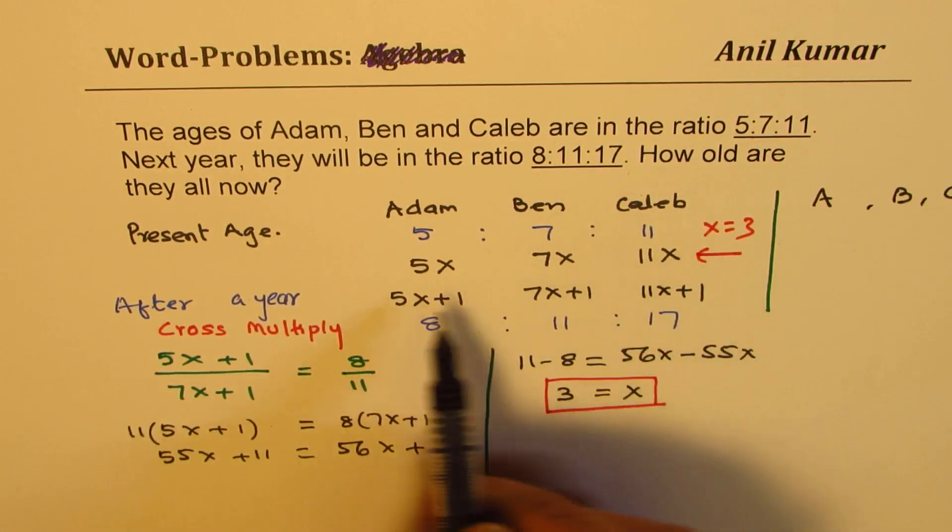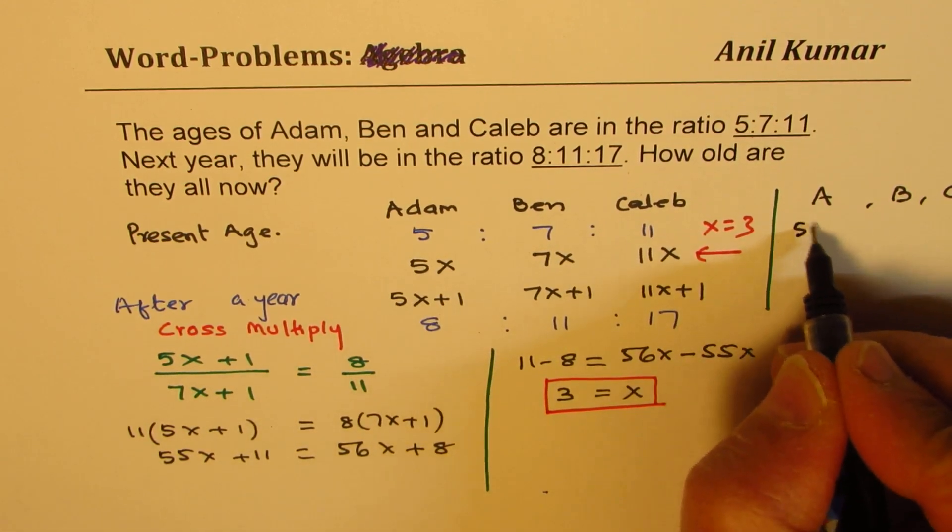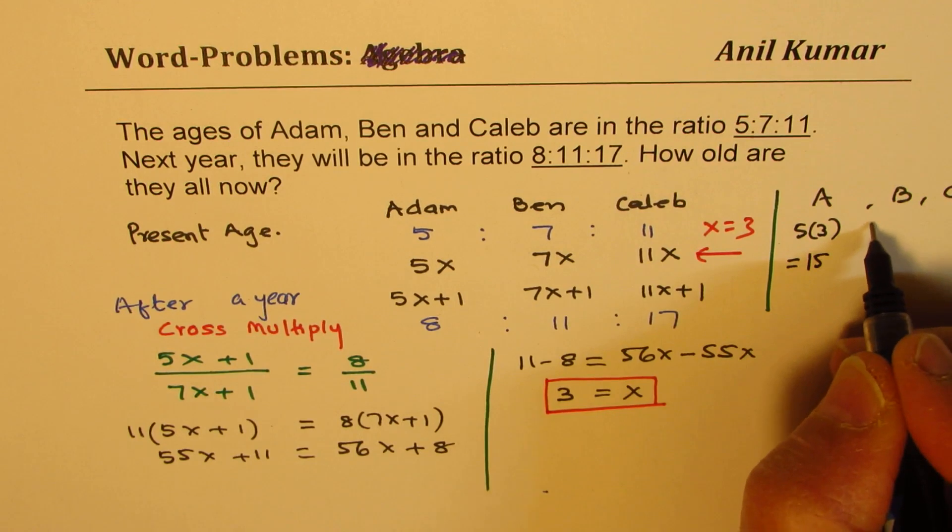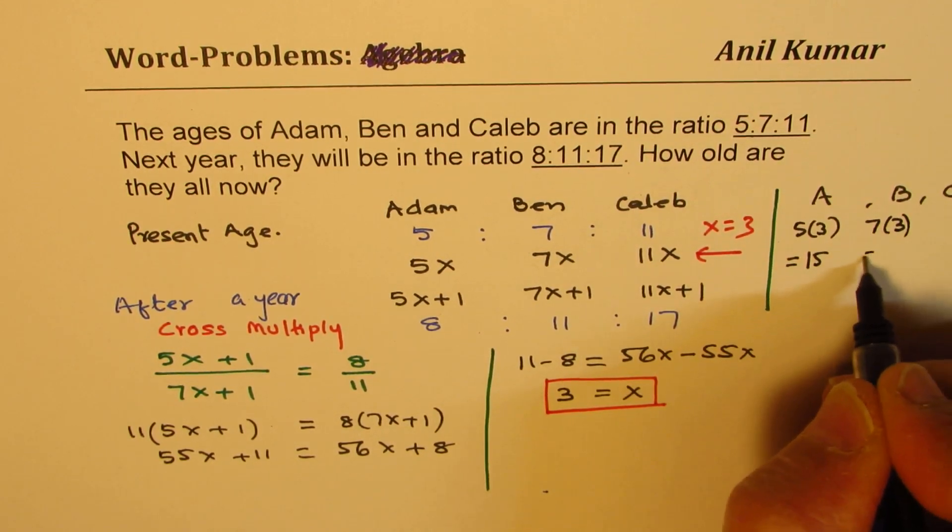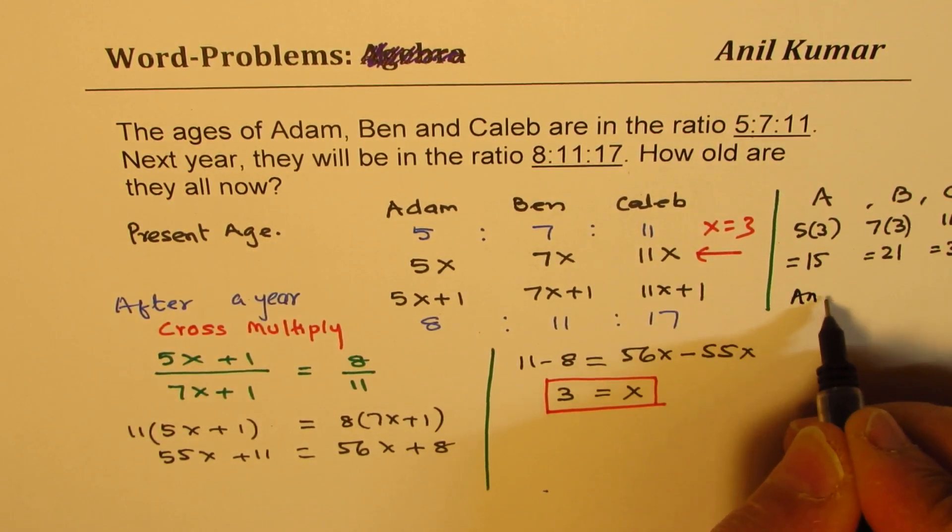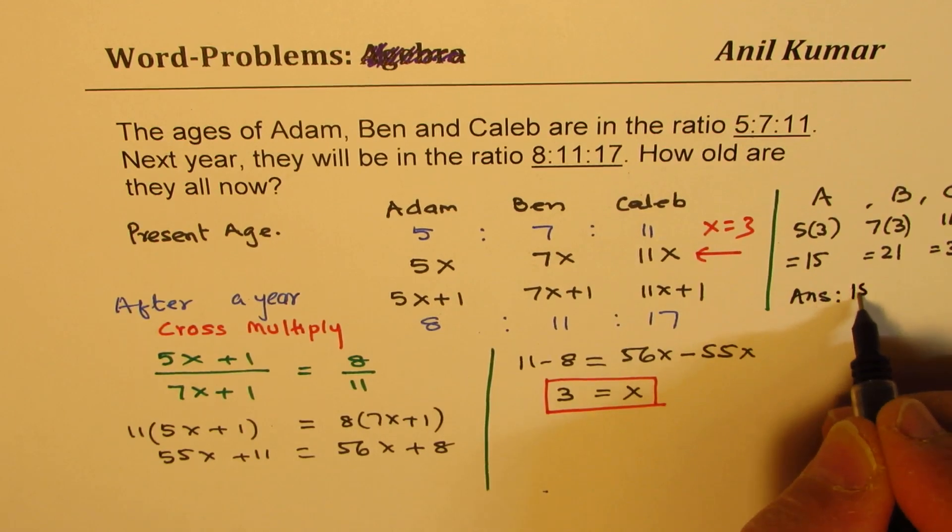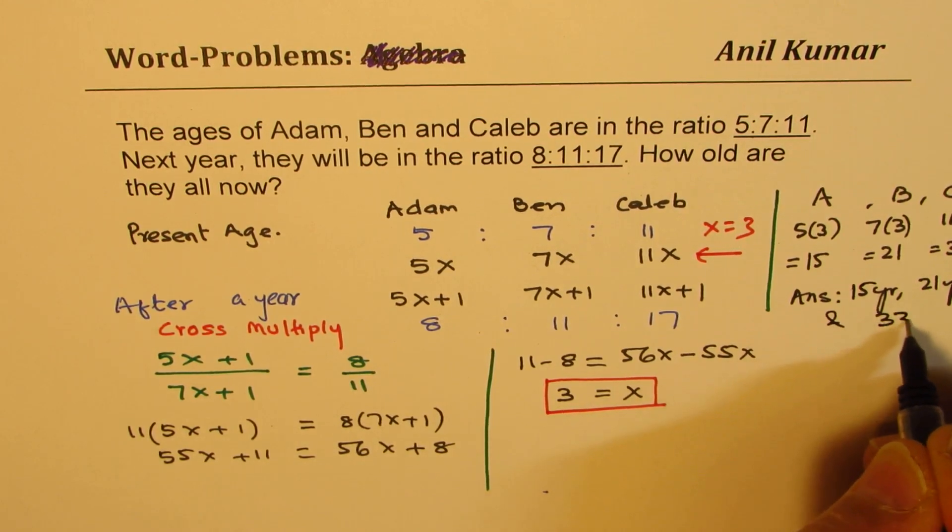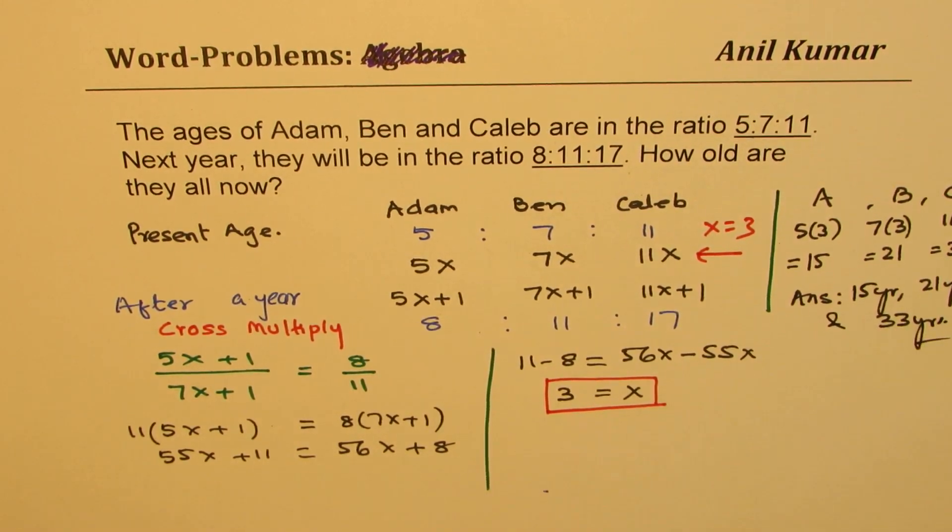Their ages will be 3 times 5 which is equal to 15, 7 times 3 which is 21, and 11 times 3 which is 33. So that is our answer. Their ages are 15 years, 21 years and 33 years.